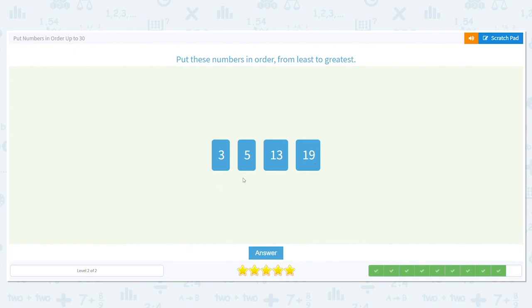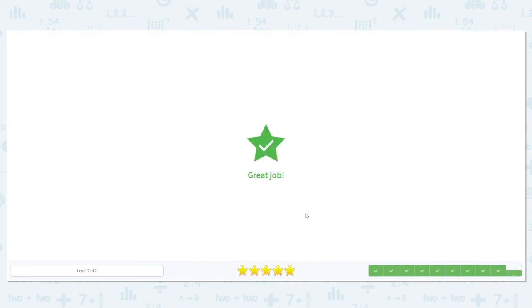3, 5, 13, 19. That's least to greatest. And you just finished another good activity. We'll see you next time.